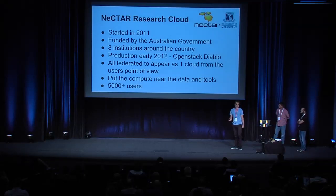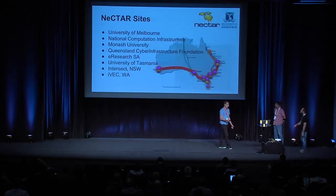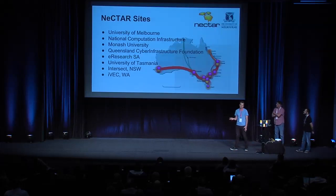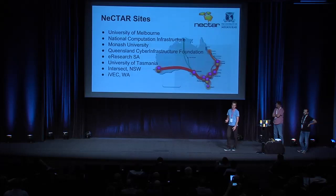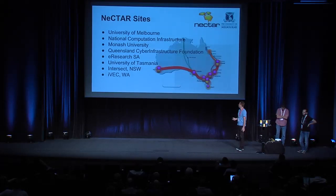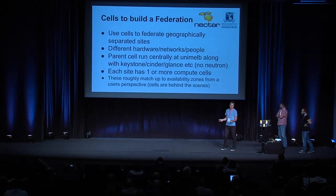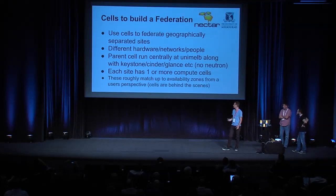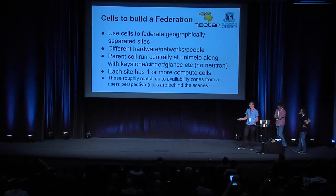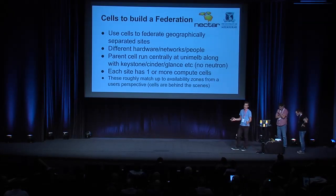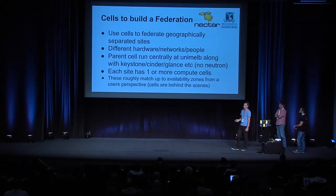We've currently got just over 5,000 users using this. We've got eight institutions around Australia — it's quite a big area. The pink dots are actually our cells, and the other colored dots are some of the larger HPC and research tools around the country. We use cells to federate all these research sites around the country. They all have different hardware, different people, different administration domains, so it is a challenge in that sense. With the main aim of making it easy for the users, there's one dashboard they can log in and launch over all the sites around the country.